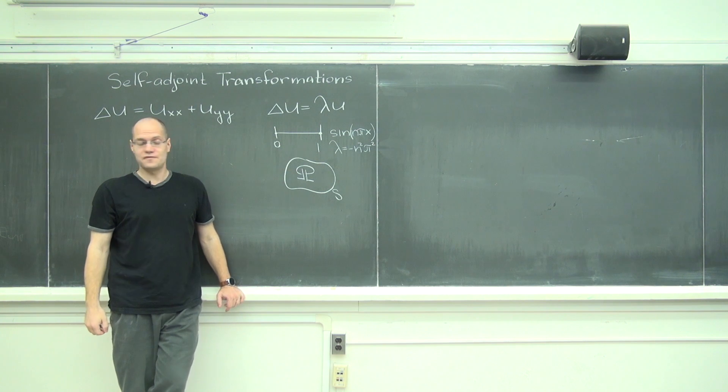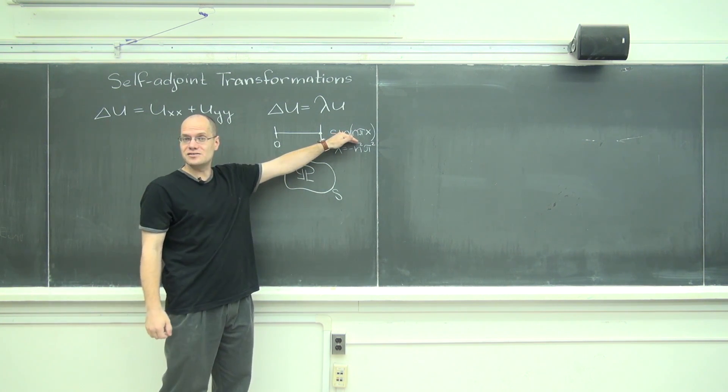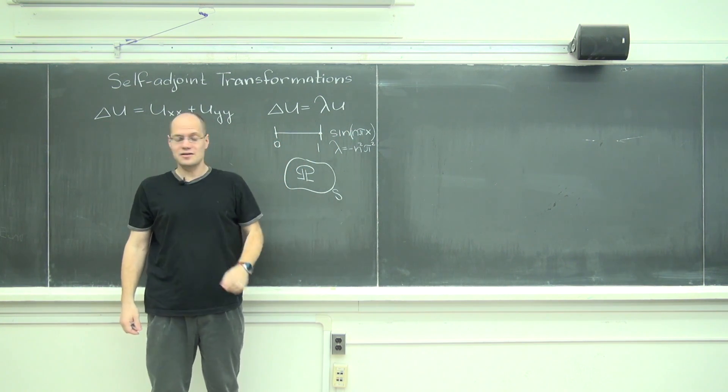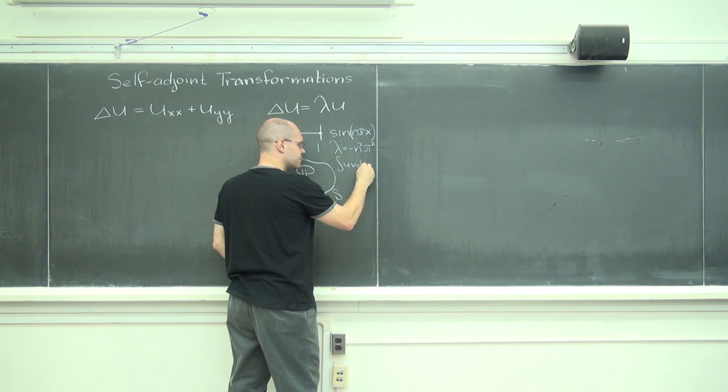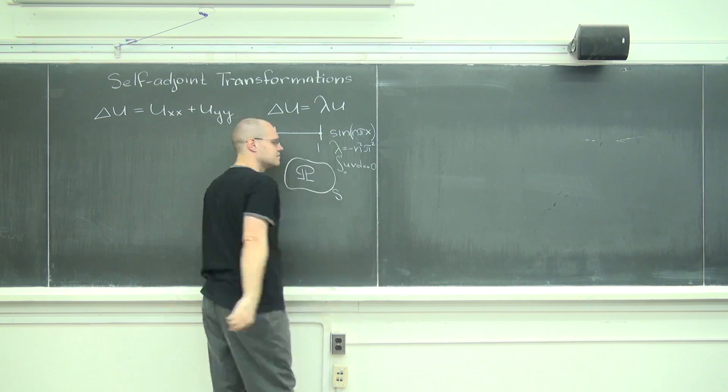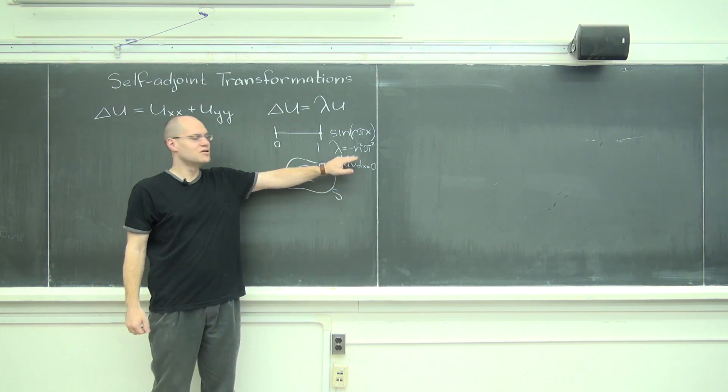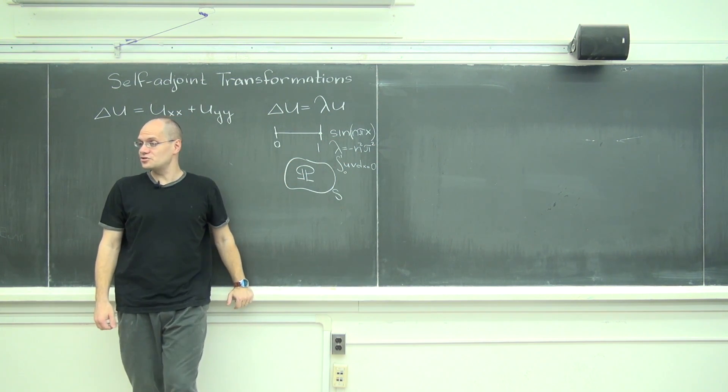And you will also find that all of these sines are actually orthogonal to each other with respect to this inner product. With respect to this inner product, all of these sines are orthogonal to each other.